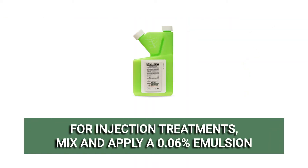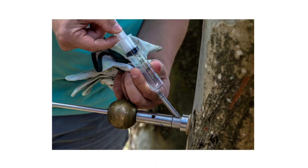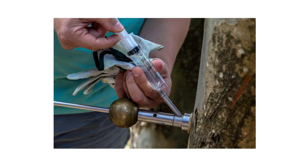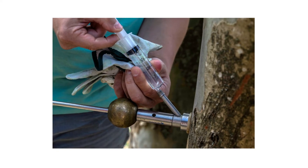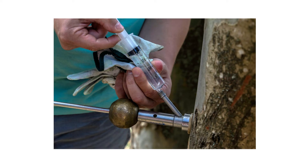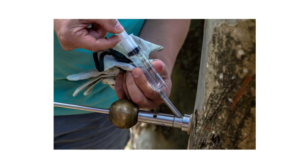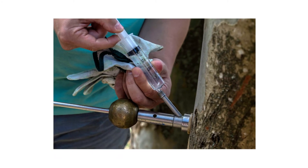To conduct an injection treatment, prepare a solution of Supreme IT at the same emulsion rate of 0.06%. Using the appropriate equipment, drill into the tree to reach the termite colony and galleries, and inject the solution into the cavity. This treats all surfaces and tunnels the termites use to travel throughout the tree and eliminates the entire colony.